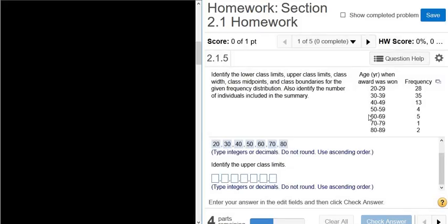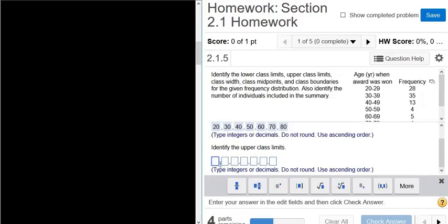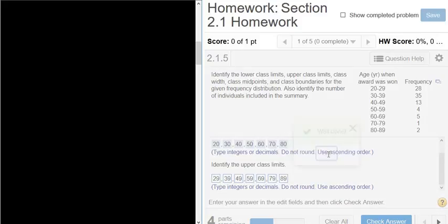Now it says identify the upper class limits. So the upper class limit is the largest number that fits in the class. It's these numbers up here, so 29, 39, 49, so I'll type those in. So 29, 39, 49, 59, 69, 79, and 89. Let's click check answer. Hurrah, got it right.